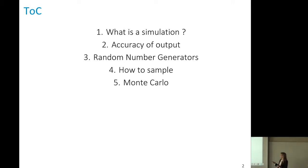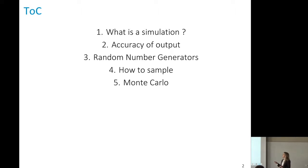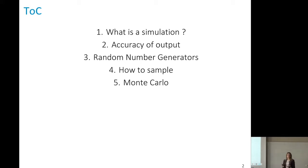We will see how to measure the output of a simulation using confidence intervals. To measure the accuracy of the output, we will need random numbers, and for this we will use pseudo-random numbers created by random number generators. The random number generators will also be used to sample from distributions, which is necessary for performing simulations. Then tomorrow we will see how to use Monte Carlo to compute several quantities that can be expressed as expected values.